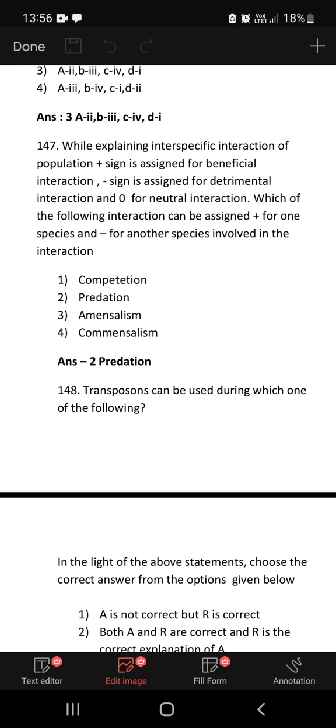Plus sign is assigned for beneficial interaction, minus sign for detrimental interaction, zero for neutral interaction. Which of the following interaction can be assigned positive for one species and negative for another species involved in the interaction? The answer is predation.